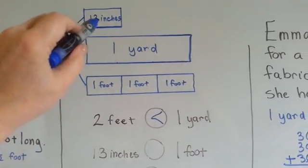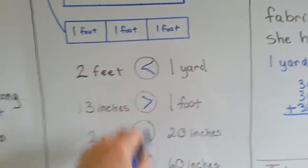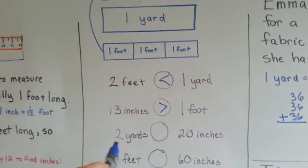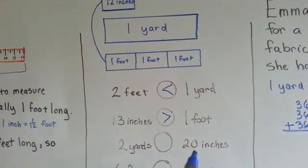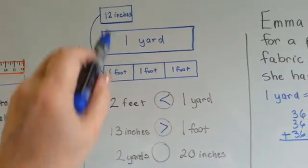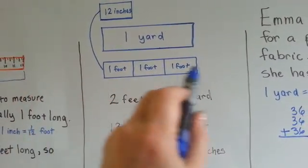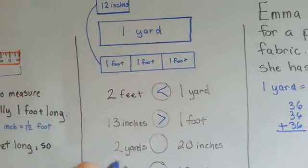Well, one foot is 12 inches, 13 is an inch bigger, so 13 inches is bigger. Which is bigger, two yards or 20 inches? Well, one yard is three feet. One foot is 12 inches. So two yards would be six feet. That would be a lot bigger than 20 inches.